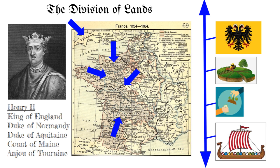The Holy Roman Empire was incredibly vast, so once it collapsed it left much of Europe open for rule, and everyone wanted their own slice of land. This is because land became a form of currency during the Middle Ages. It is with the division of social classes that created the division of land.